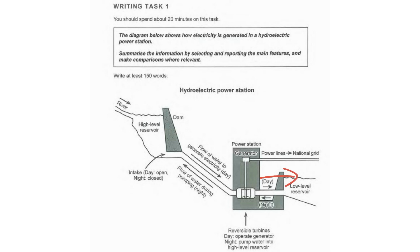The pipes continue to the low-level reservoir, and water flows there after passing through the turbines. After the day period finishes, the night period starts. From the low-level reservoir, the reversible turbines now act as a pump, pumping the water back up to the high-level reservoir via the intake under the dam. Then as day comes, everything starts again. We write the day period first in body paragraph one because it starts with day, has more steps, and makes for a longer paragraph.